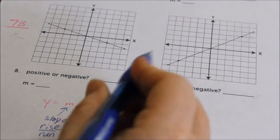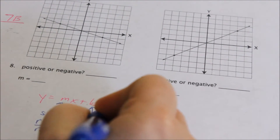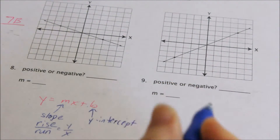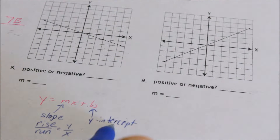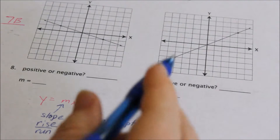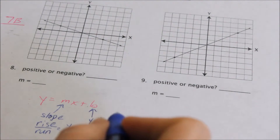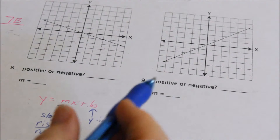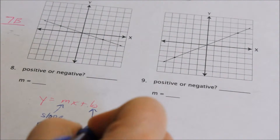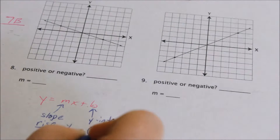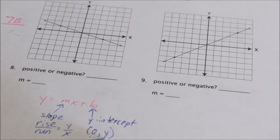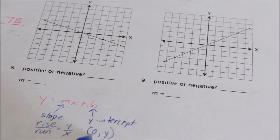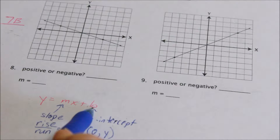b represents what is called the y-intercept. Intercept is when you catch something, when you cross something. So y-intercept is where the line crosses the y-axis. If you're on the y-axis, your x-coordinate would be zero. Your y can be any value — positive or negative. The main thing to remember: your x-coordinate is zero along the y-axis. So b represents your y-intercept.